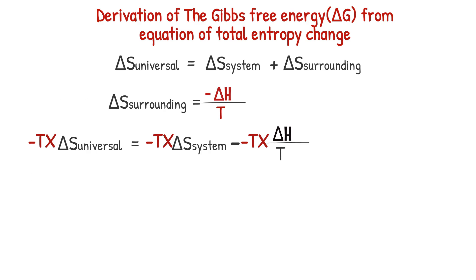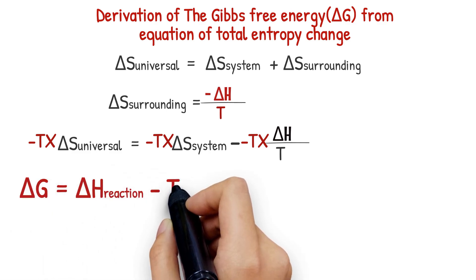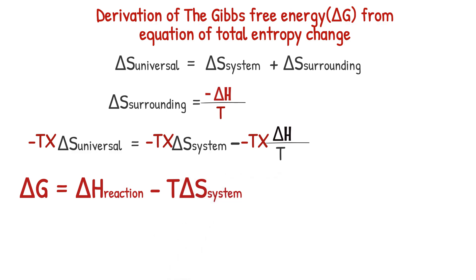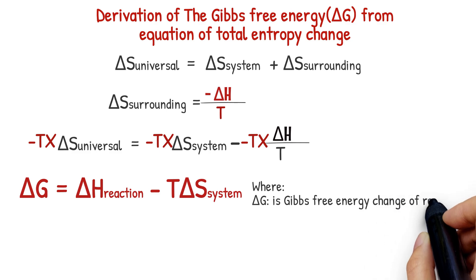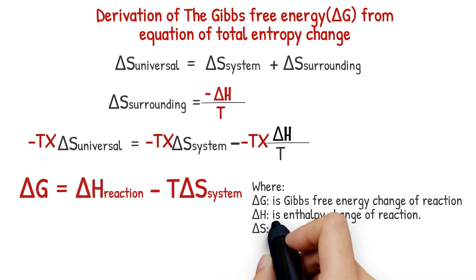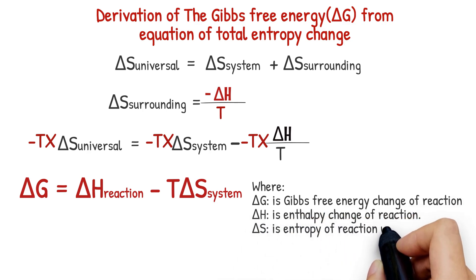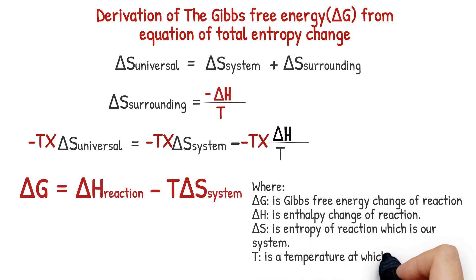As a result of the above rearrangement, the free energy is equal to the enthalpy of reaction minus temperature in Kelvin multiplied by the entropy change of the system. Where: delta G is the free energy change of the reaction, delta H is the enthalpy change of the reaction, delta S is the entropy change of the system, and T is the temperature at which the reaction takes place. From this equation, you can determine if a reaction is spontaneous or non-spontaneous.